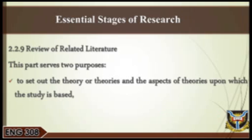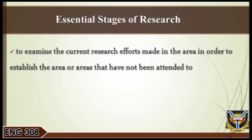Review of related literature is probably the bulk of things done in the second chapter of the research writing. This part serves two purposes: to set out the theory or theories and the aspects upon which the study is based, and to examine the current research effort made in the area in order to establish the areas that have not been attended to. The first part is sometimes labeled 'theoretical framework' and may be handled more logically with regard to the statement of the problem. The second part surveys research previously done on the problem and evaluates what existing research has and has not accomplished in solving the problem under study.